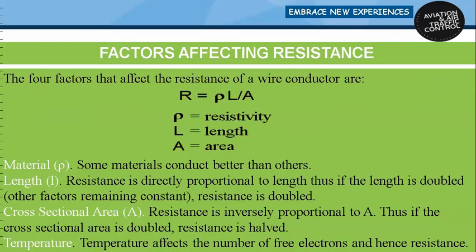The resistance of a conducting material is found to be directly proportional to the length of the material, inversely proportional to the cross-sectional area of the material, depends on the nature of the material, and also depends on the temperature. The resistance is given as R = ρL / A, where ρ is resistivity, L is the length of the conductor, and A is the cross-sectional area.